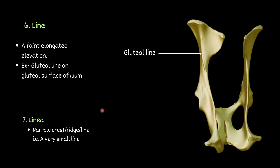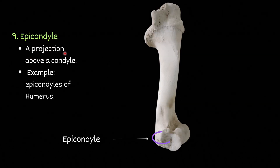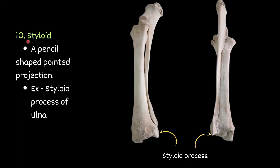Linear — almost the same as line; a narrow crest, ridge, or small line. Then process — a general term for a bony projection. For example, zygomatic process of the temporal bone. Then epicondyle — a projection above a condyle. Epi means above. So above the condyle you will find the epicondyle. This structure is the condyle, and above it is the epicondyle.